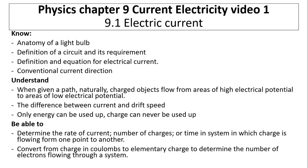Hi, this is Mrs. La Barbara. This is Physics Chapter 9, Current Electricity, Video 1. Today's topic is electric current. The objectives are: know the anatomy of a light bulb, know the definition of a circuit and its requirement, know the definition and equation for electrical current, and know the conventional current direction.